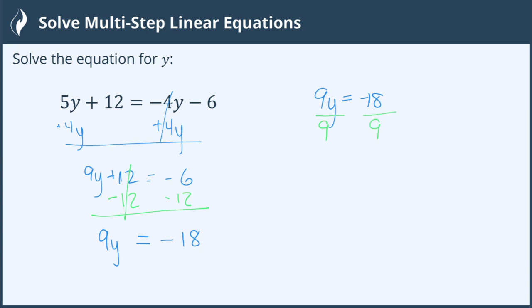And the reason that works is because 9 divided by 9 is 1. And technically this becomes a 1y, which is just y. That's exactly what we want to isolate that variable. Bring down my equal sign. And then I have negative 18 divided by 9. That works out nicely.